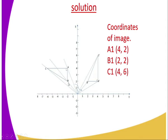Then you join B to the center of rotation. After that, you measure an angle of 90 degrees again and draw a line where the 90 degrees passes. You measure the equal distance from point B to point O — that is the intersection of the Cartesian plane — then measure the same distance along the line where the 90 degrees passes, and mark where the image of B will be.